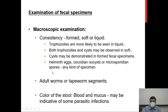Helminthic eggs, coccidian oocysts, and microsporidian spores may be found in any specimen type. Although we must examine all specimens for everything, there are higher chances of finding trophozoites in liquid specimens while cysts are more likely in formed specimens.